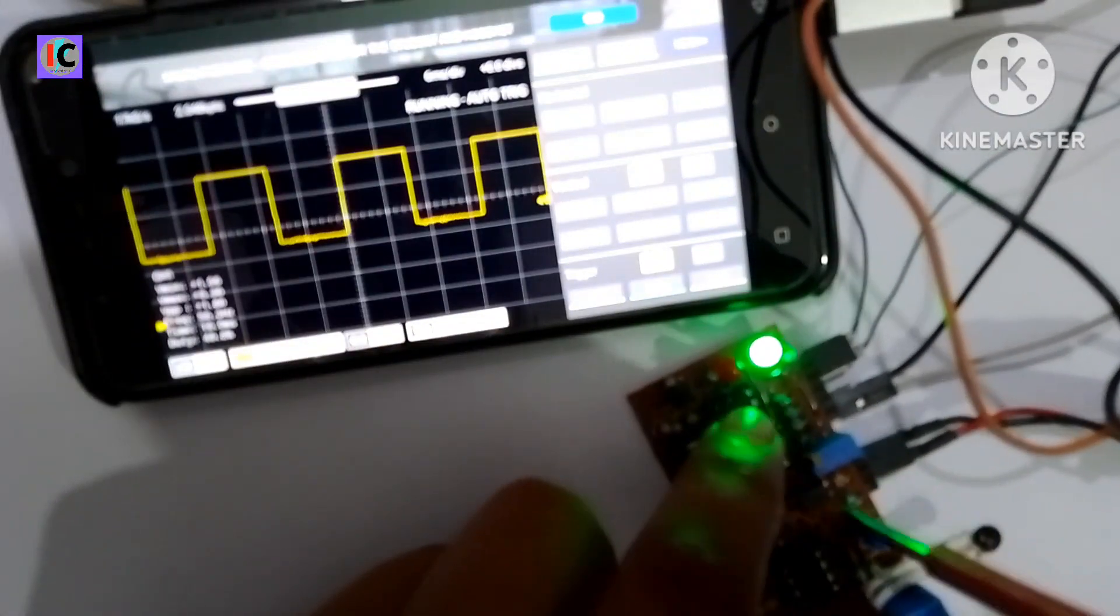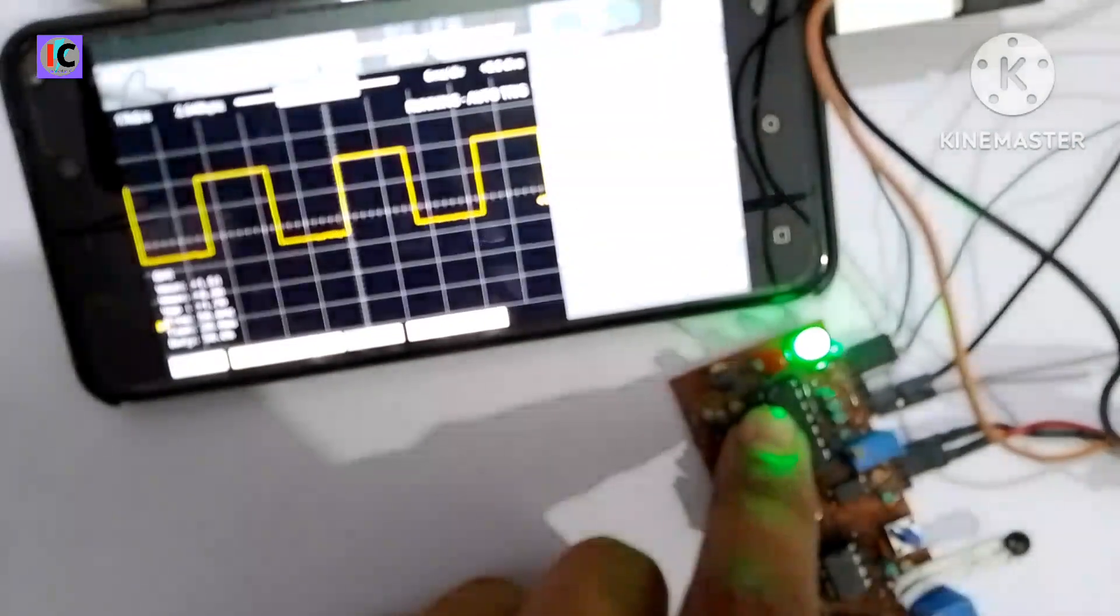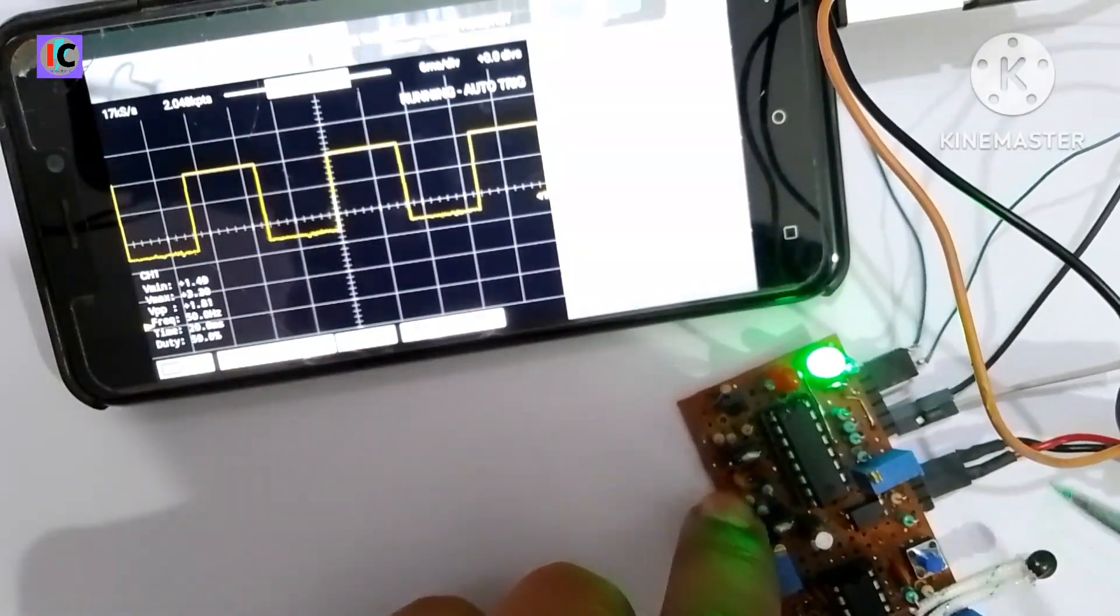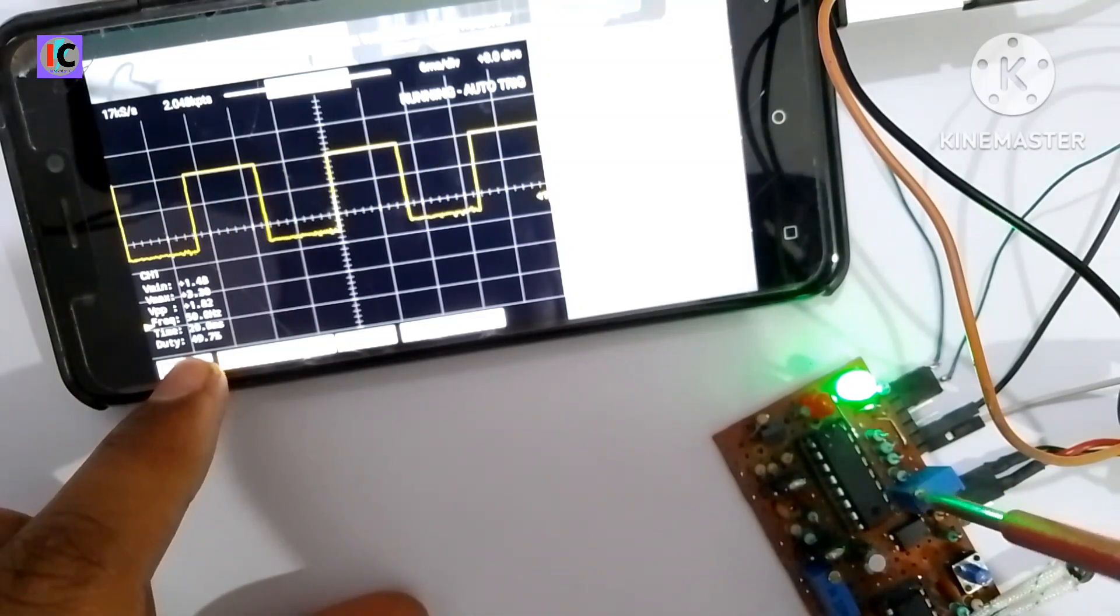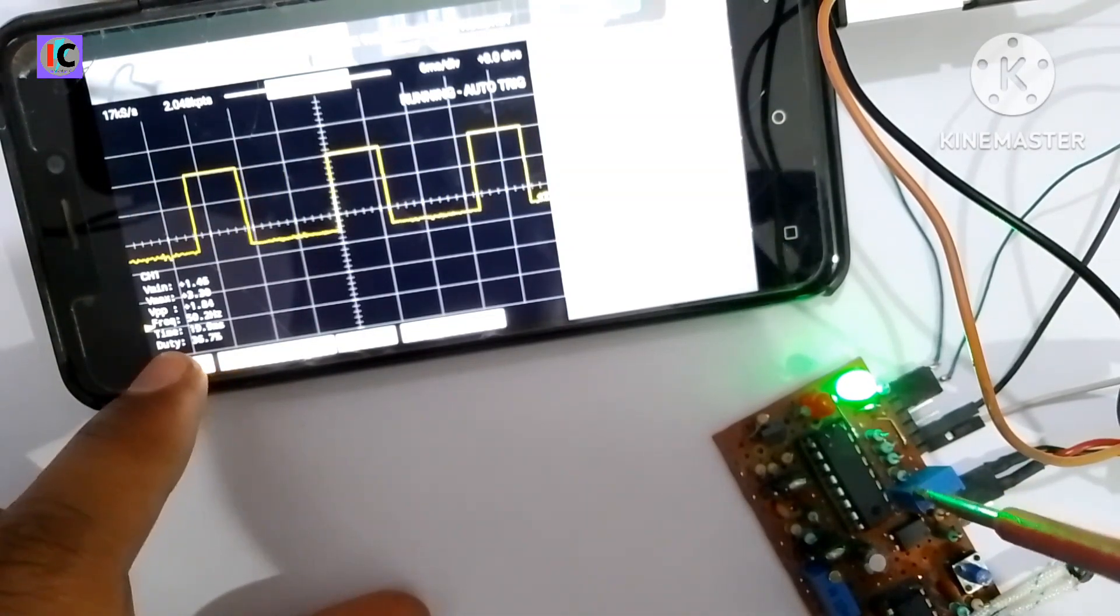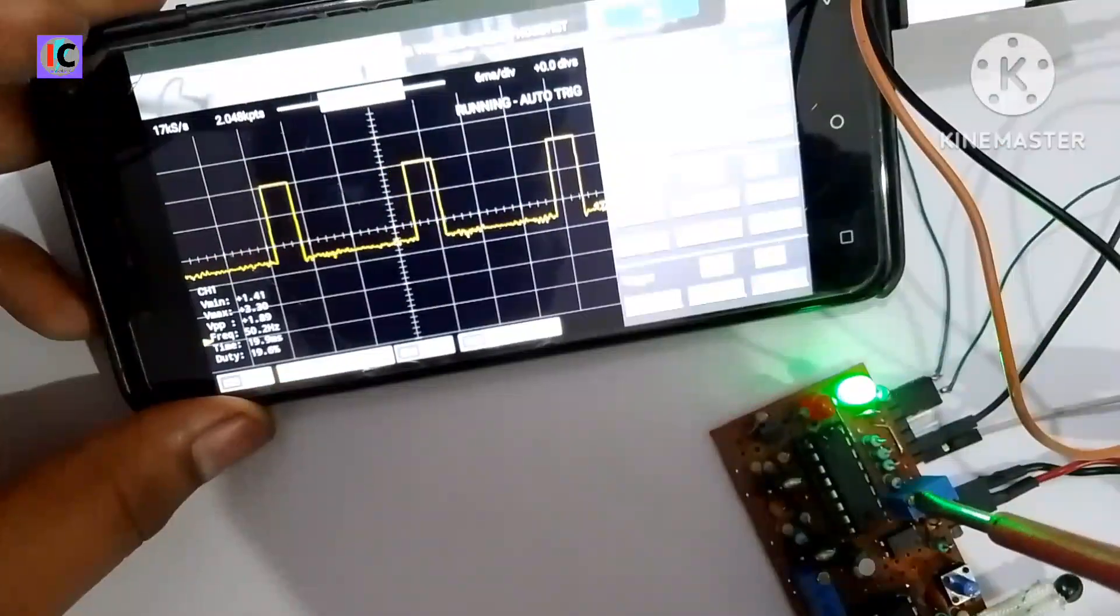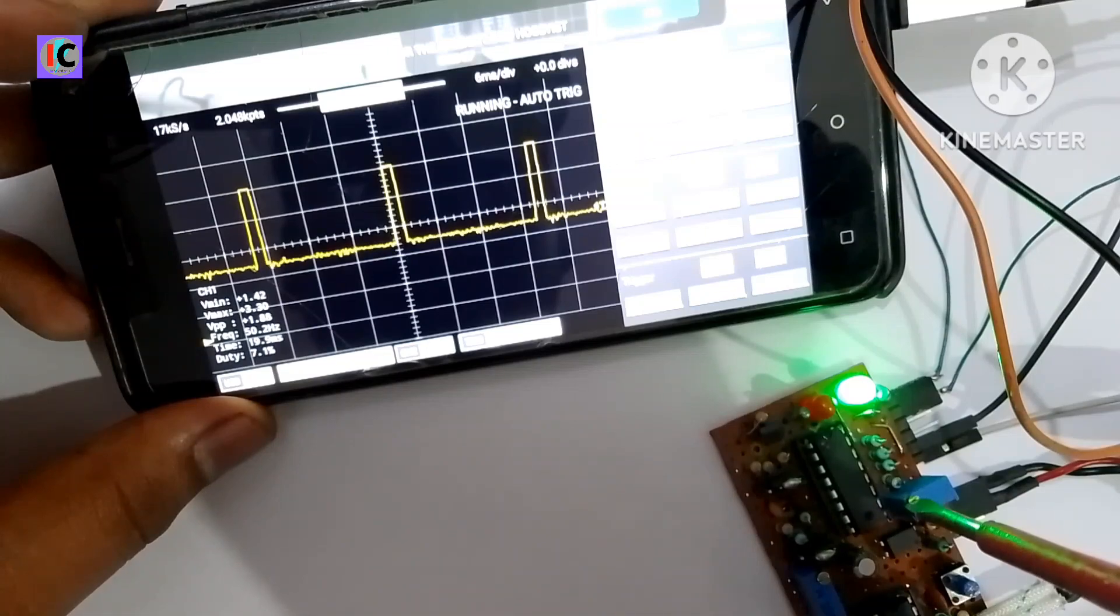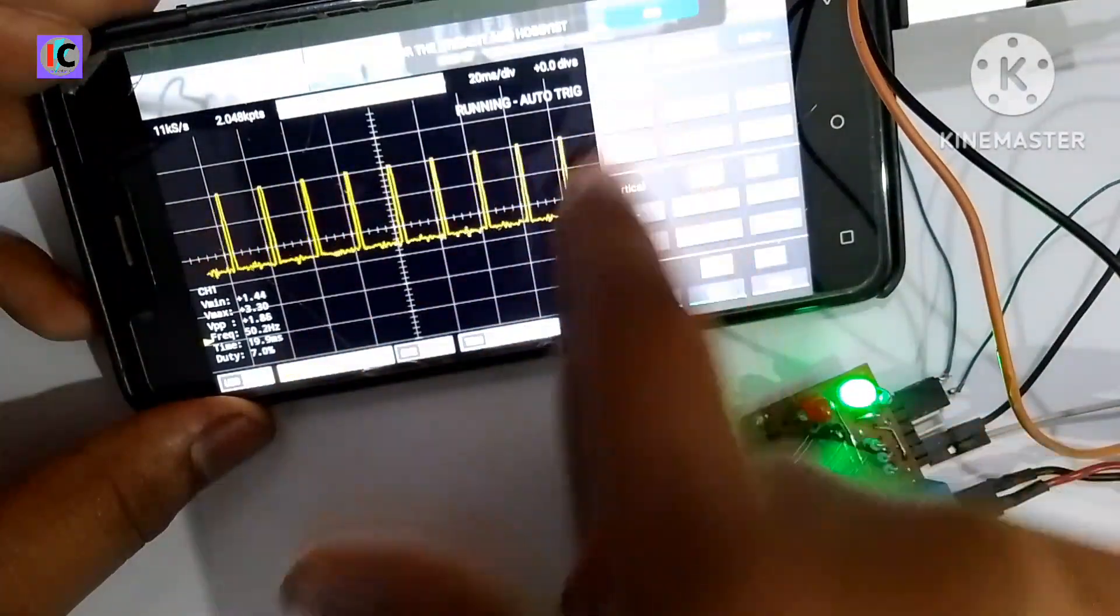Now I'm increasing and decreasing the duty cycle. Here you can see it's at 36 percent and I'm decreasing more so it's very low. You can also see on the waveform the duty cycle decreases.